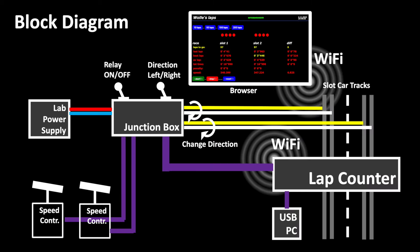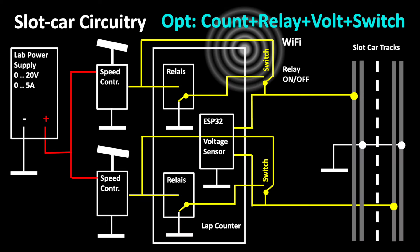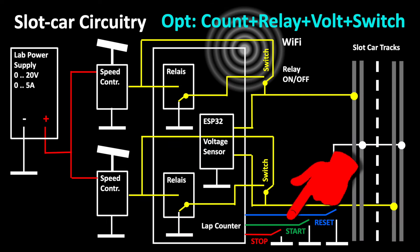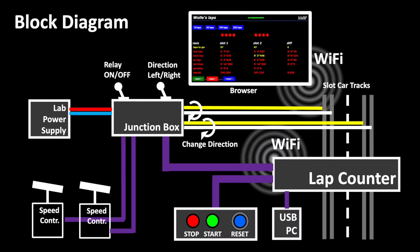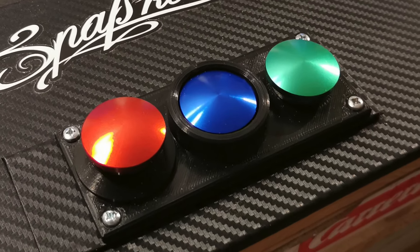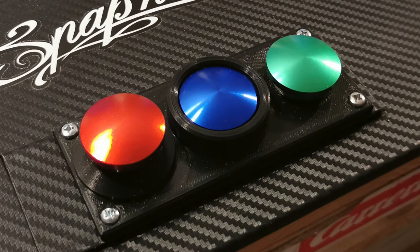In this state we can already control everything via the browser interface. In the next step we connect the hardware buttons to the lap counter as these make it really easier to operate the lap counter in the hectic pace of a race. This allows us to control the race via the button switches and at the same time via the browser interface.